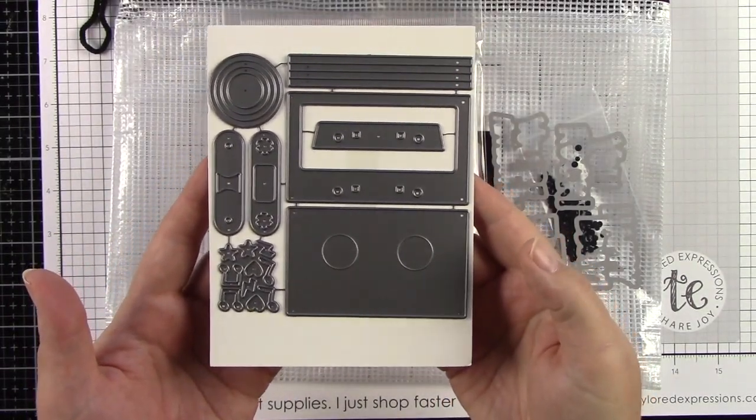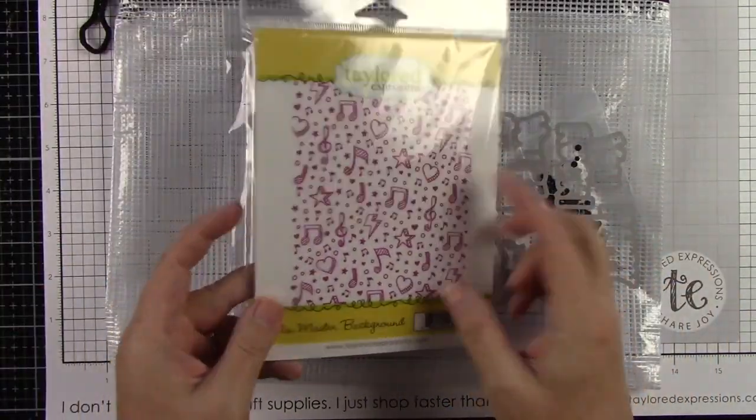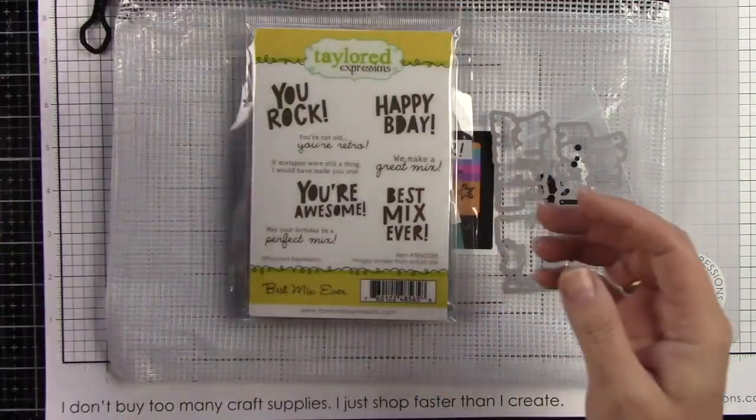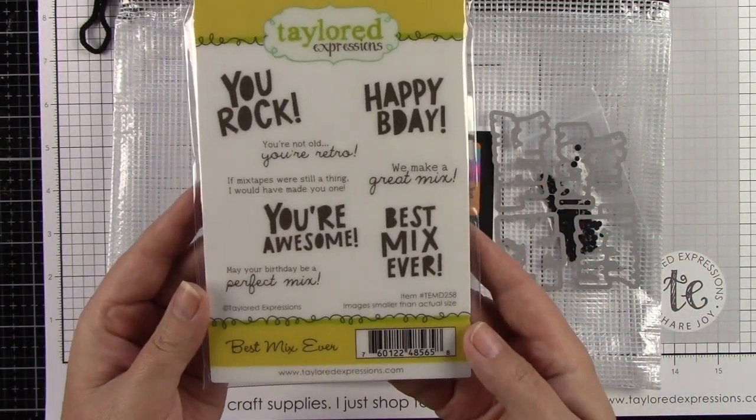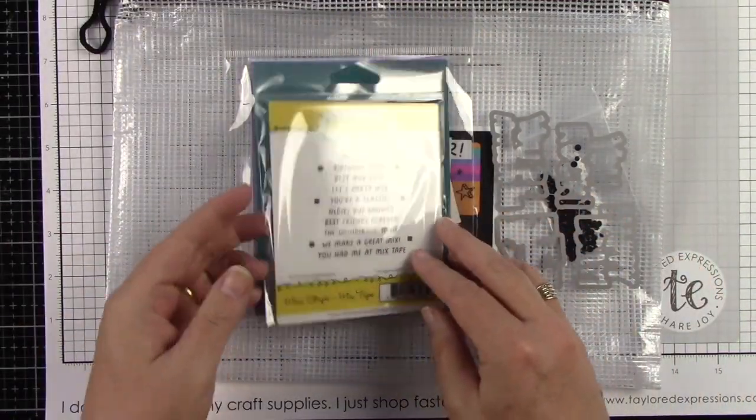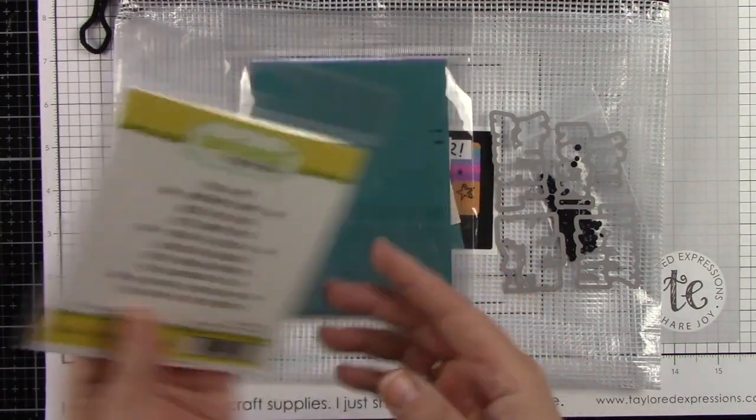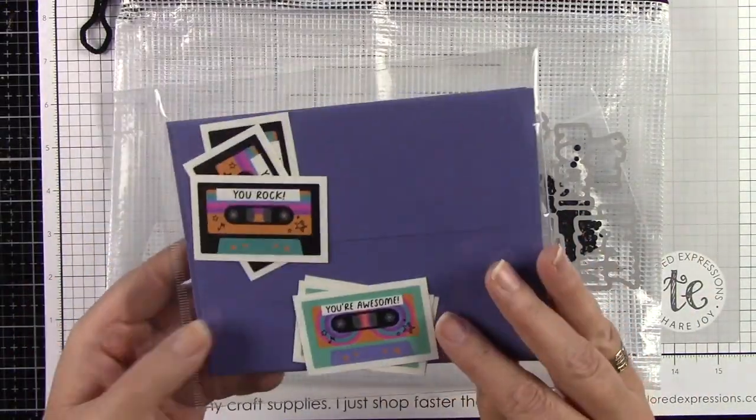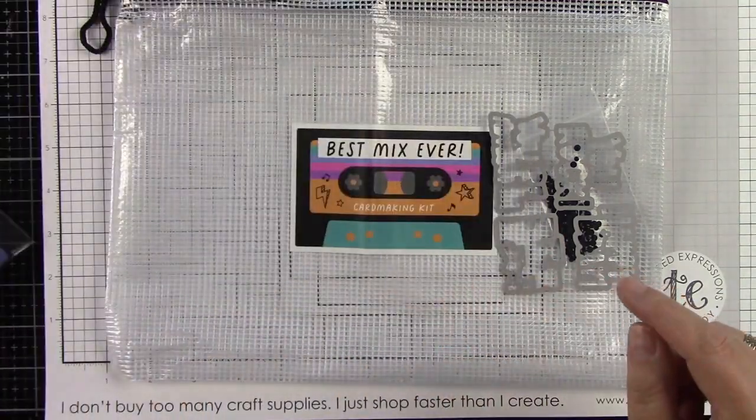You have your mix tape die, mix master background, the Best Mix Ever stamp set, the mini strips mix tape, envelopes, and the cute cassette tape stickers for your envelope and your bag.